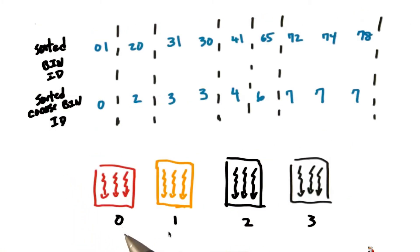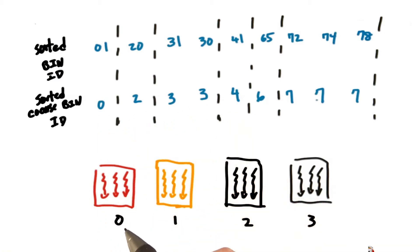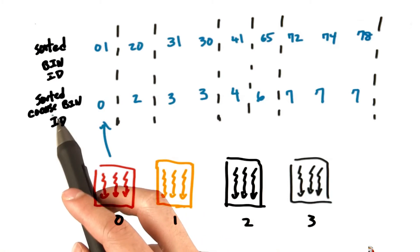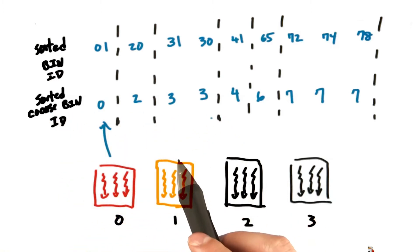Now let's assign a thread block to each coarse bin. Thread block 0 is responsible for computing the histogram of coarse bin ID 0. Thread block 1 won't have anything to do because in the sorted coarse bin ID there is not a bin with an ID of 1, so it will compute an empty histogram.